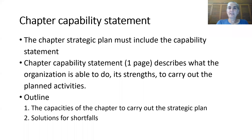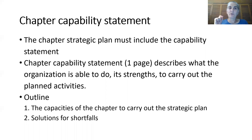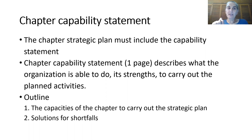The capability statement will go along with the chapter's strategic plan. It should be about one page in length, and it will describe what your chapter is able to do — its strengths — to carry out the planned activities. The outline will cover: first, the capabilities of the chapter to carry out the plan, and second, solutions for shortfalls.